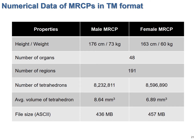This is the numerical data of the tetrahedralized mesh type reference phantoms. The height and weight were matched to the ICRP reference values. There are 48 organs for both, and there are 191 different regions including all the source and target regions in each organ. What I would like to highlight here is the number of tetrahedrons — it is over 8 million, and consequently the size of the ASCII file to define each phantom is over 400 megabytes. These numbers show that the phantoms are very elaborate models, but at the same time this means that it may take long time for Monte Carlo simulations. We actually tested these phantoms in MCNP, FLUKA, and Geant4, and among them, Geant4 showed definitely the best performance. There were also some other features that are advantageous for the mesh type reference phantoms.